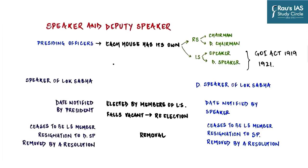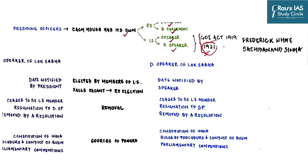This controversy was triggered by the Speaker of a legislative assembly. Speakers and deputy speakers are very powerful positions in Indian constitutional and legal context. For conducting proceedings, each house has its own presiding officers: Rajya Sabha has the Chairman and Deputy Chairman, while Lok Sabha has the Speaker and Deputy Speaker. These offices came into existence through the Government of India Act 1919 and were first constituted in 1921, when Frederick White and Sachchidananda Sinha were appointed as Speaker and Deputy Speaker by the Governor General.